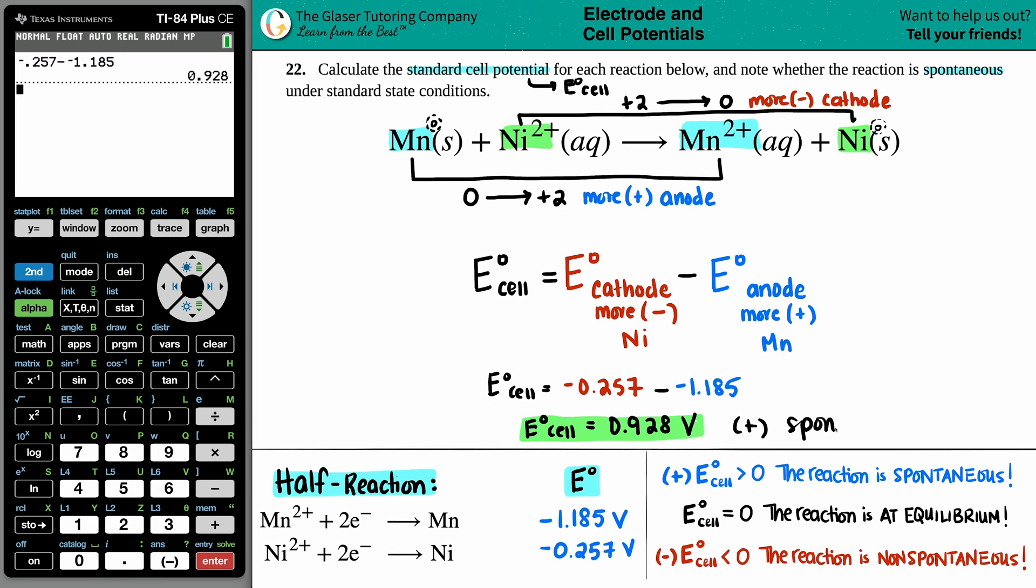The 0.928 is a positive value. So we know that this reaction is a spontaneous reaction. It does not need any additional amount of energy to get it going. It runs by itself. And that is it. That's the answer.